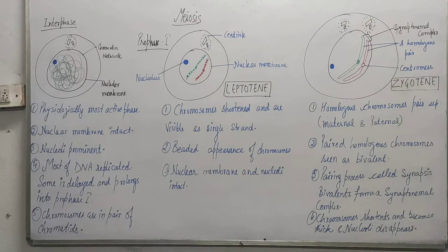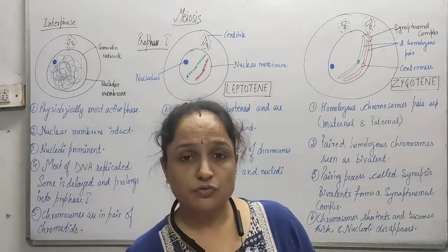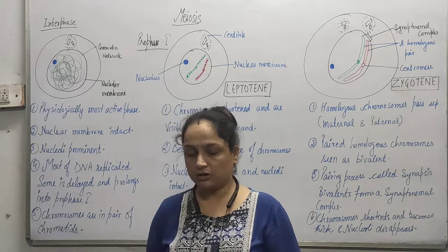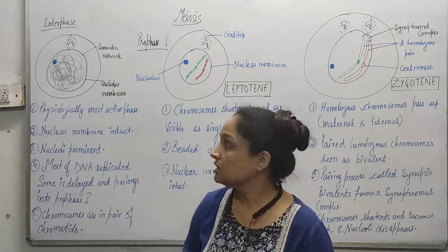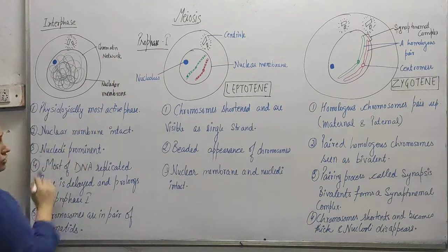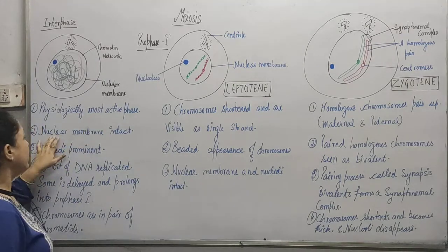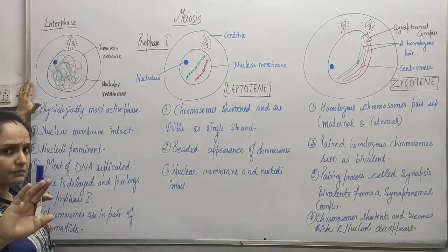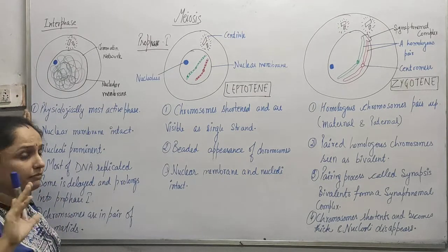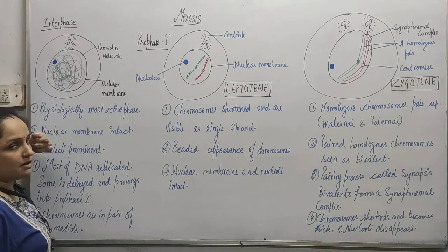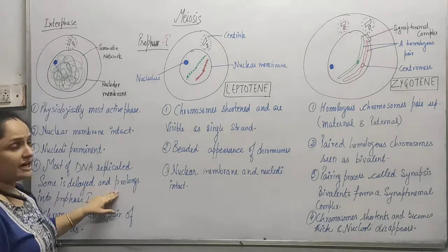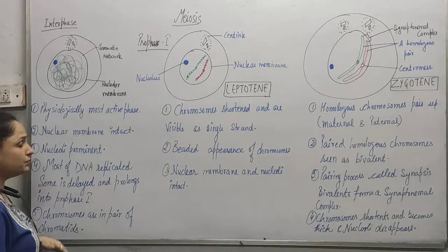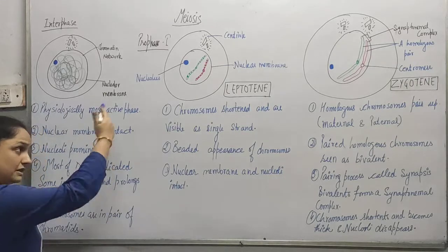Moving forward in the series, we are going to continue with the prophase. Before prophase, we have to go to the interphase. Interphase is a very important phase because in this phase the cell is going to prepare itself for cell division. This is the physiologically most active phase. In this phase, the nuclear membrane is intact, nucleoli are prominent and clear cut, and most of the DNA has started replicating, though some is delayed.